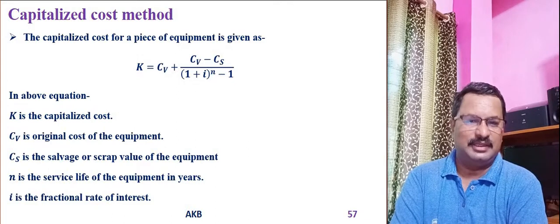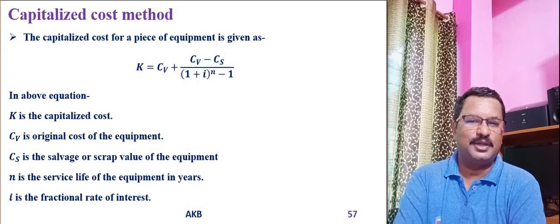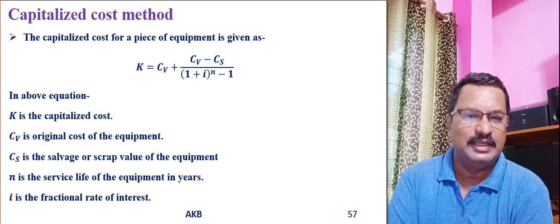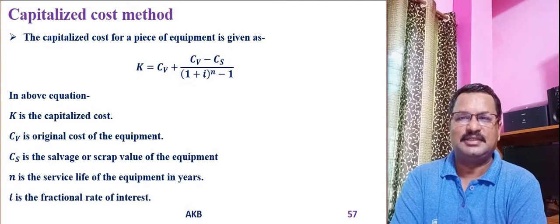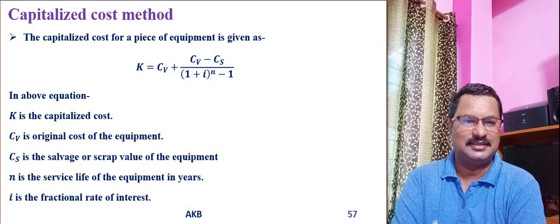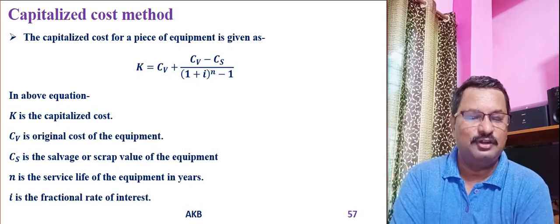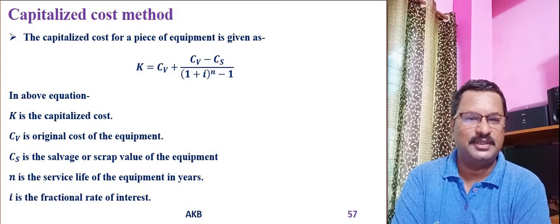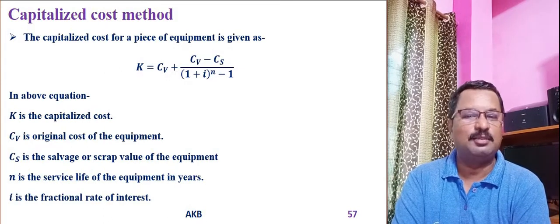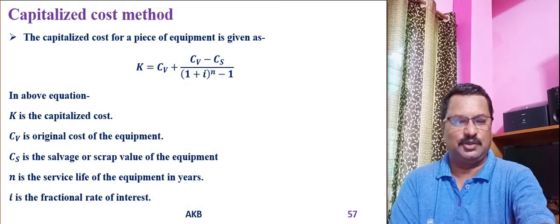In short, capitalized cost is the cost required for perpetual replacement of a particular piece of equipment. In the equation, cv minus cs — the original cost minus the salvage or scrap value — is the replacement cost of the equipment. If you have to replace the equipment, you need that amount, cv minus cs, which is why it is called the replacement cost.